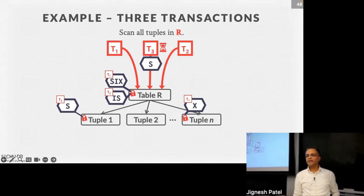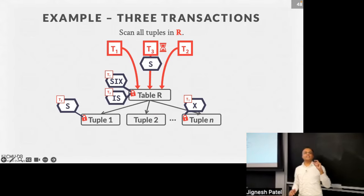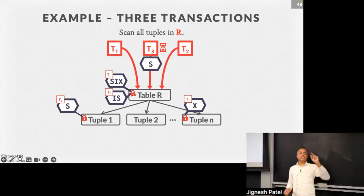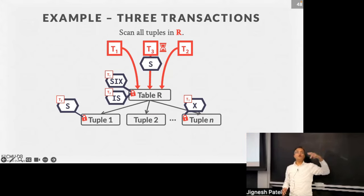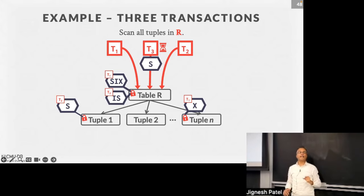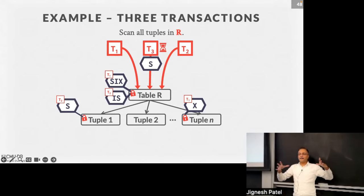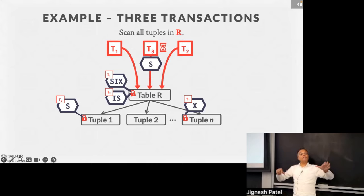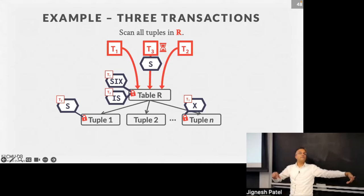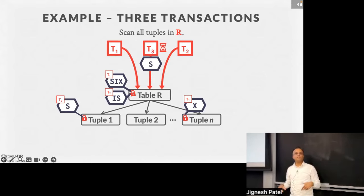Can you upgrade locks? Yes — that's lock escalation. If transaction T1 is doing a lot of X locks on tuples, it could upgrade its SIX lock on the table to an X lock. The lock table handles upgrade requests differently from normal waiting transactions — you might give upgrade requests higher priority to get ahead of the queue and get the work done if it doesn't conflict.